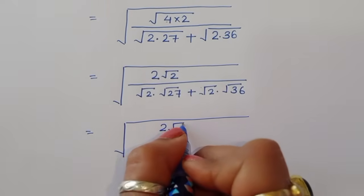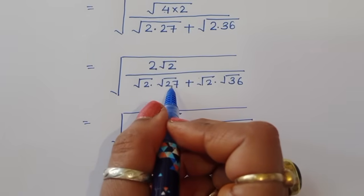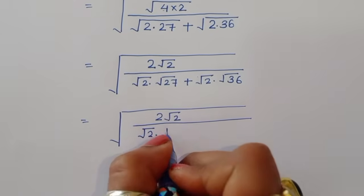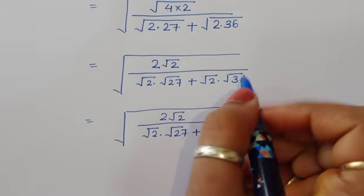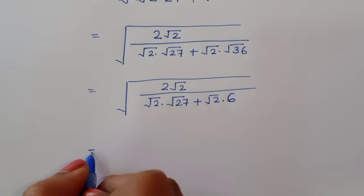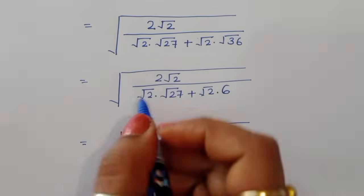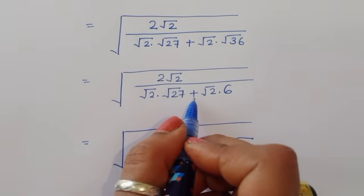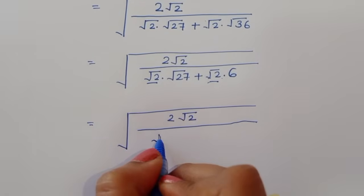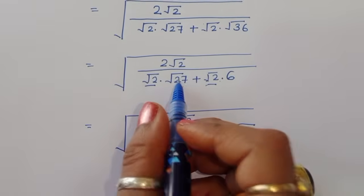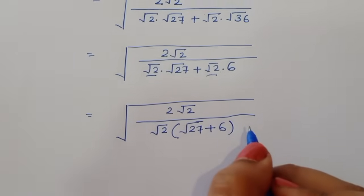This gives us 2 square root of 2 in the numerator. In the denominator, square root of 27 has no perfect square factor so it remains the same. Square root of 36 is 6. We then take square root of 2 as a common factor from the denominator, leaving square root of 27 plus 6.